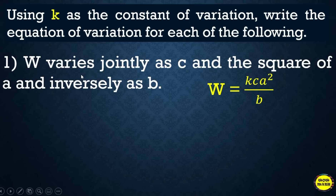Again, translating into an equation of variation gives us w = k·c·a²/b. Note that 'the square of a' becomes a². Pay close attention when translating a mathematical statement into an equation — check whether it says directly, inversely, or jointly.